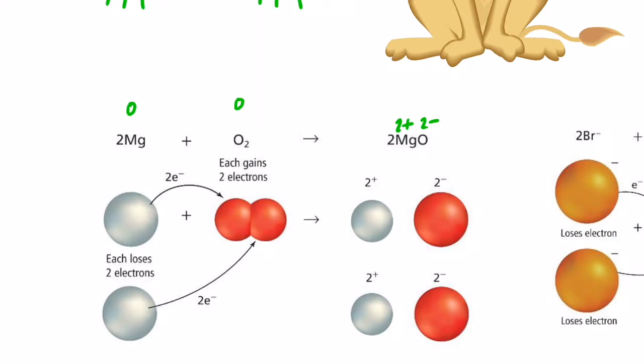So, something happened to the magnesium on the reactant side and the oxygen to allow them to form the compound magnesium oxide. Let's see. Magnesium went from an oxidation number of zero to positive two. In order to do that, it lost electrons. So, we say that the magnesium was oxidized.